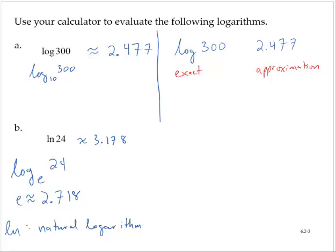Now again, if we write natural log of 24, that is an exact value. And the 3.178 is an approximation.